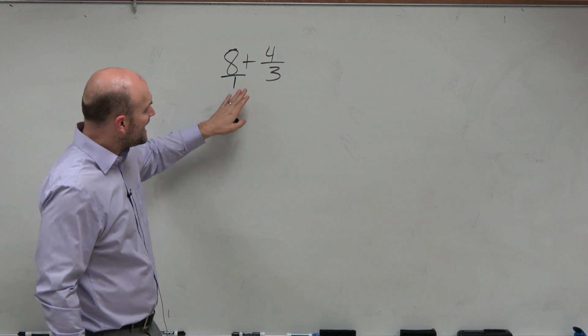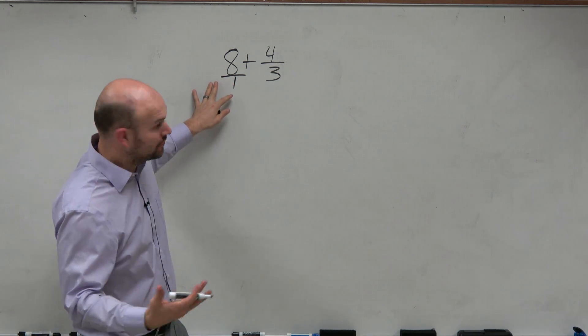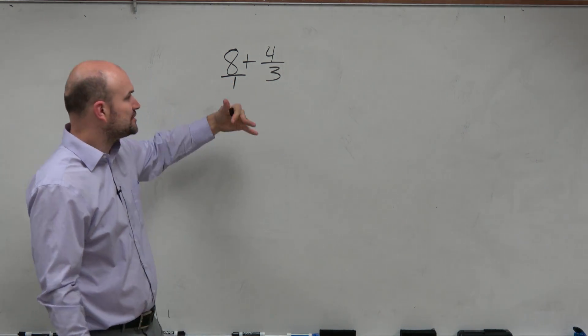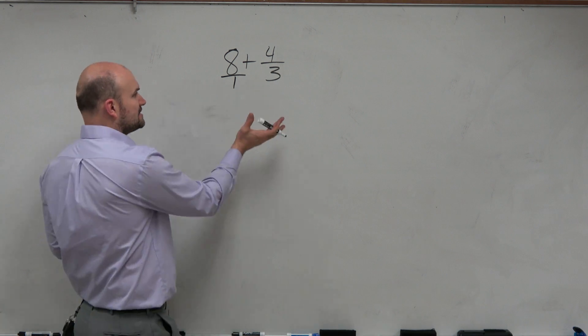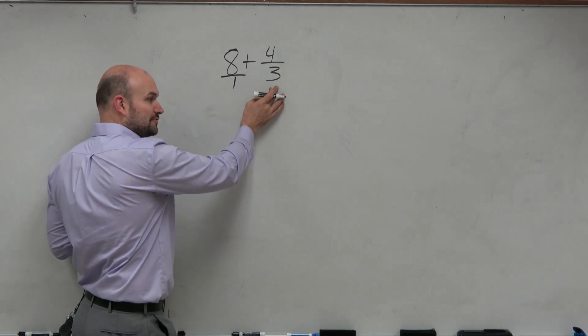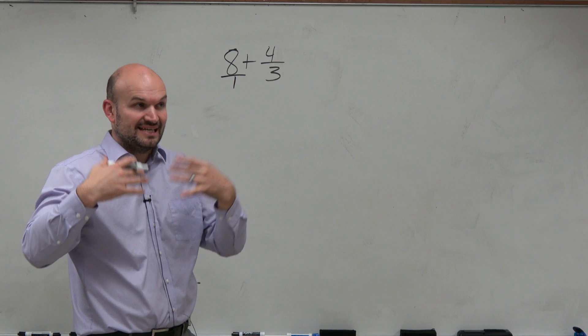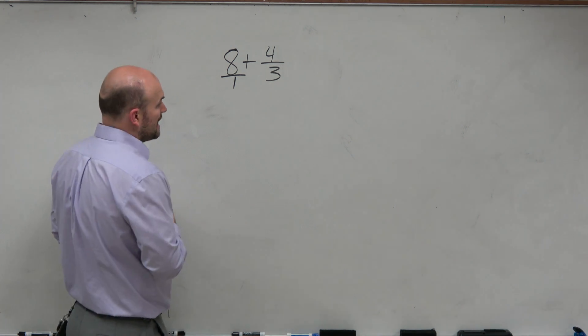But now, when we want to add our fraction, we change our whole number to a fraction to another fraction, we have to make sure we have common denominators. And you can see our denominators are not the same. This is a 1. That's a 3. So we need to get them to be the same denominator, which is what we would just say common denominators.